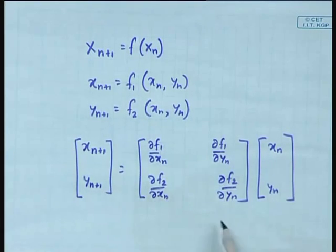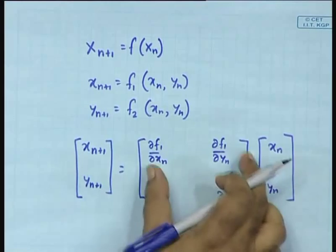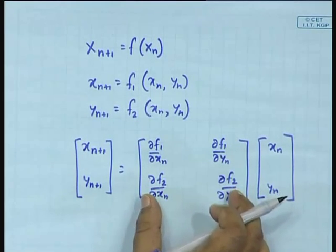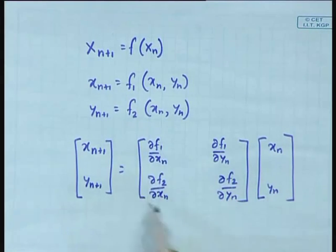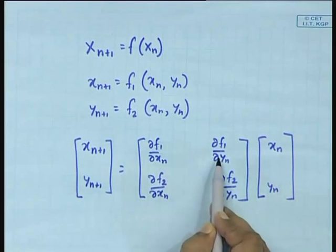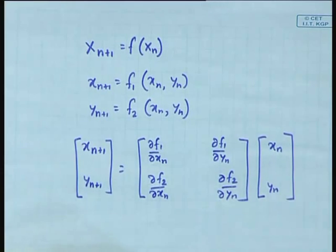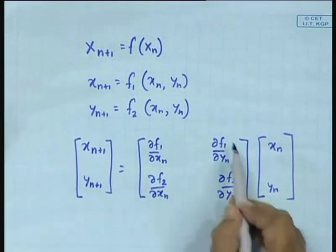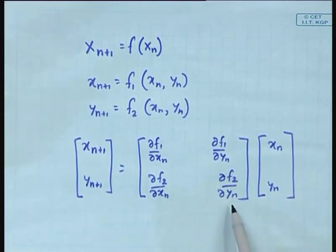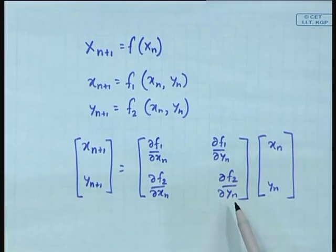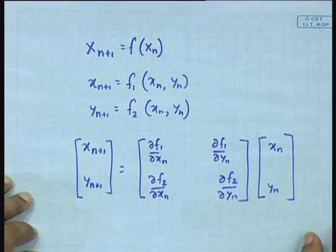What is that matrix? It is the Jacobian matrix. When you substitute the position of the fixed point into the Jacobian, you get numbers, and those numbers in the matrix yield eigenvalues. The question then becomes: what do those eigenvalues mean?